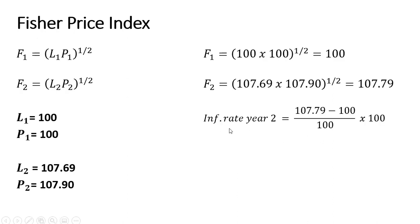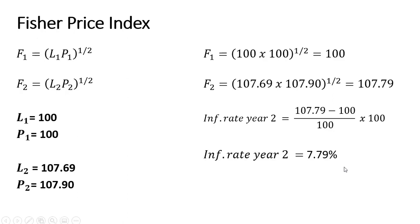In terms of the inflation rate using the Fisher Price Index, looking at the percentage change as we go from 100 to 107.79, using our percentage change formula, we get inflation in year two of 7.79%.